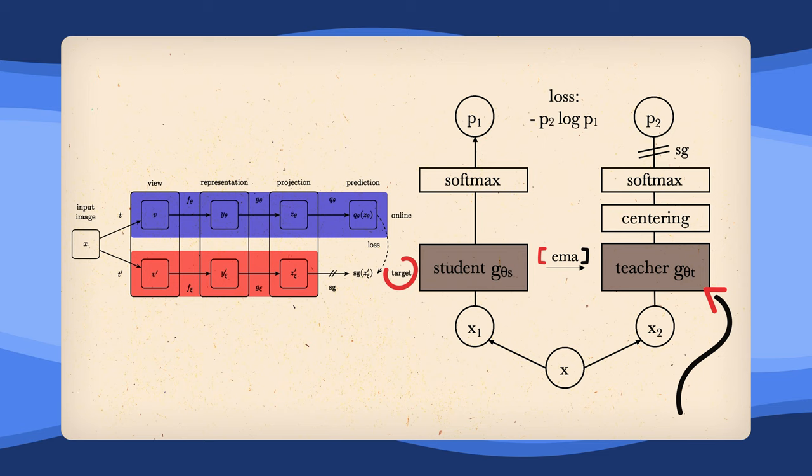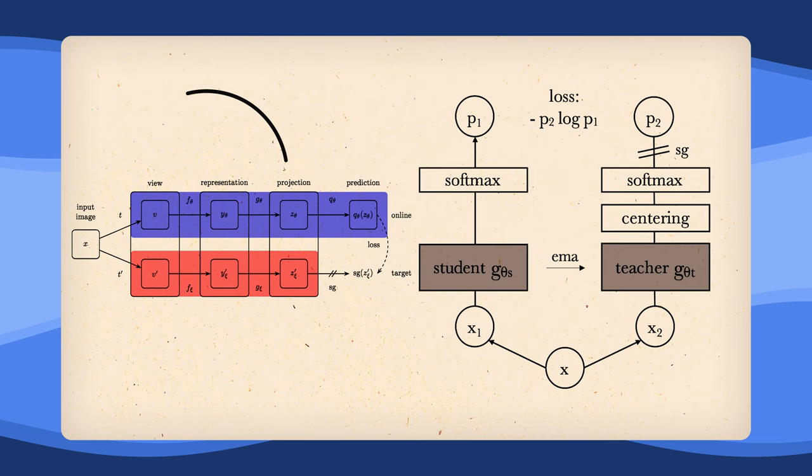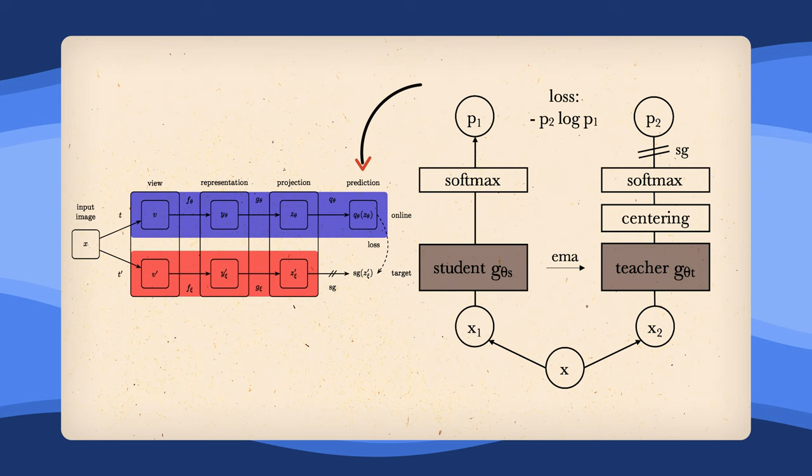From here on, things start to look different. We have no further projection layer, nor a prediction head. If there is no prediction head, how do we prevent, or rather reduce the likelihood, of representation collapse?